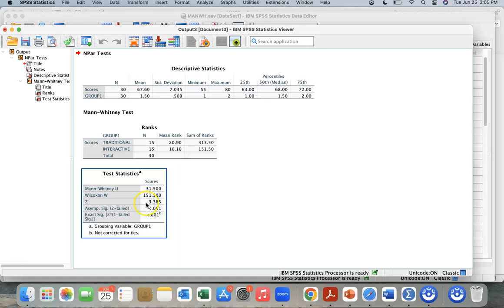If we go to the test statistics, we can see our statistic here is 31.5, and we can see our Z-score here, and the significant level is below .05, is .001, so there's a significant difference, and you can see that traditional teaching method ranks significantly higher.